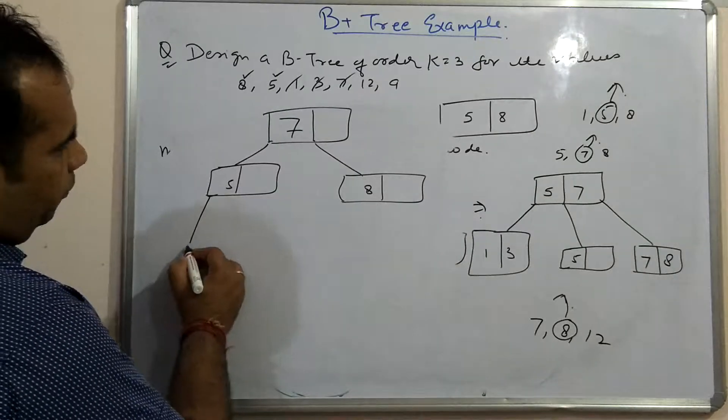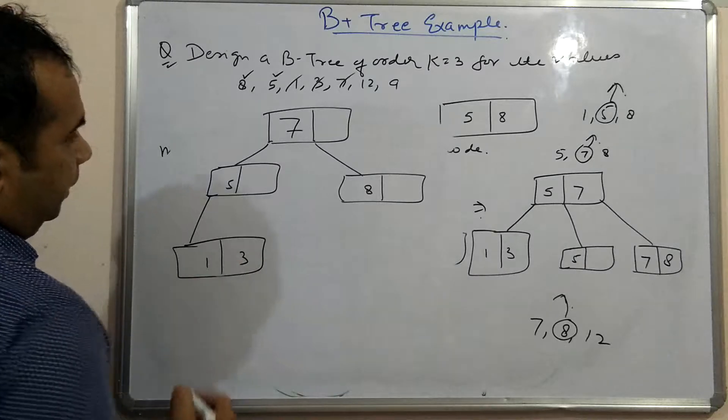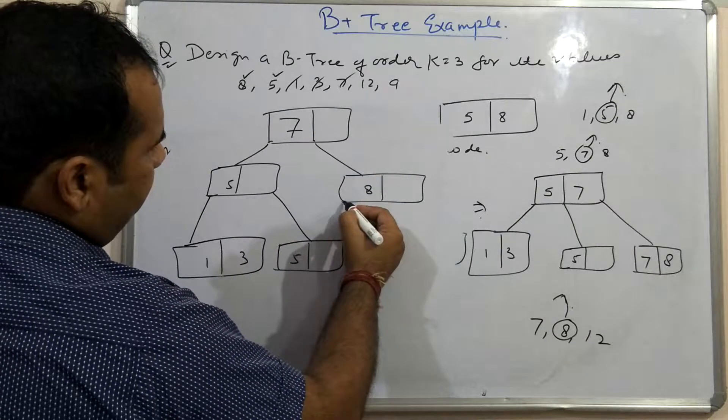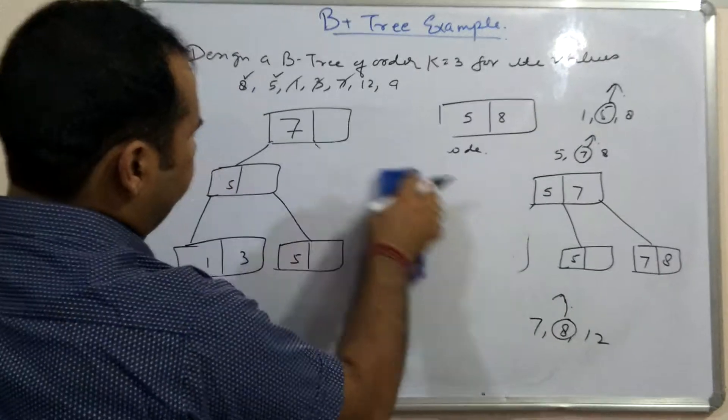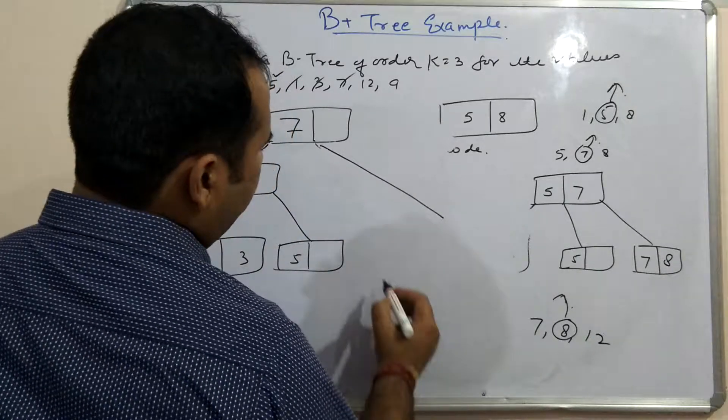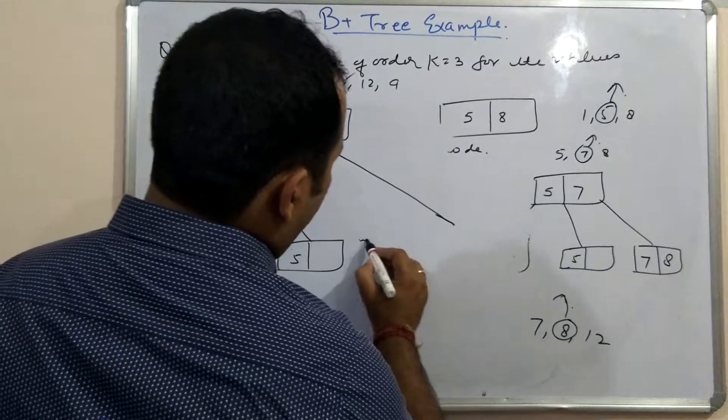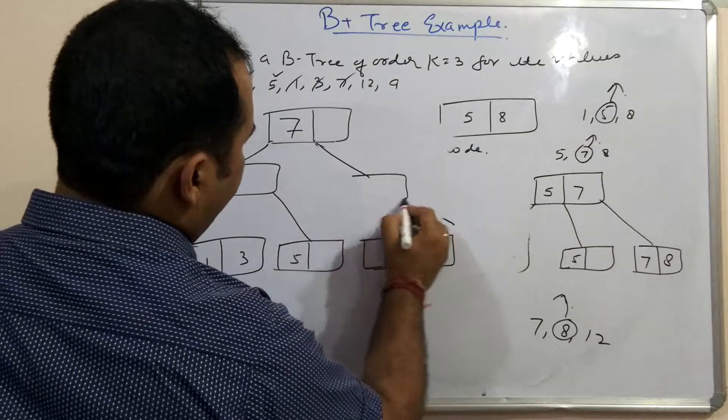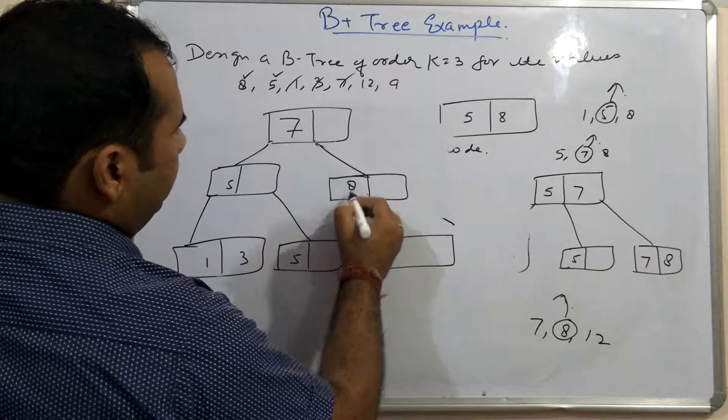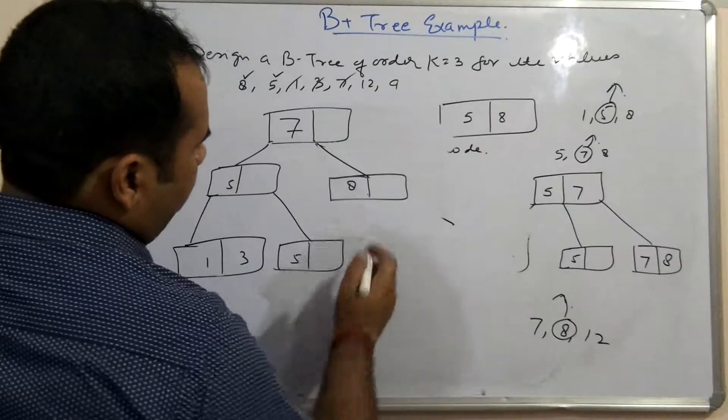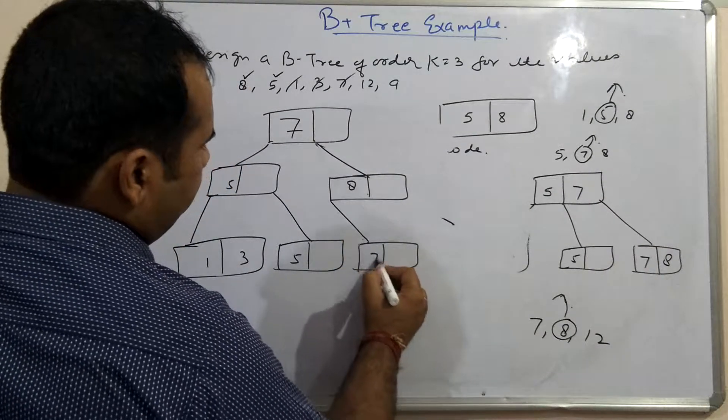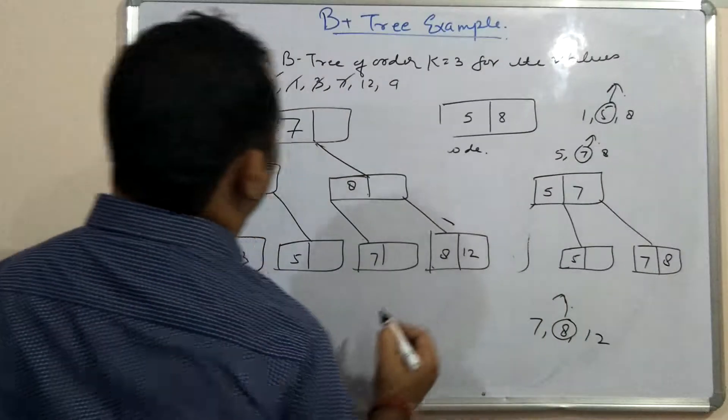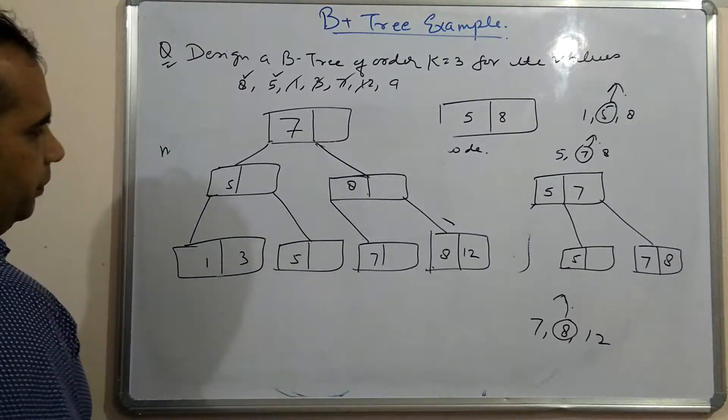Now using the concept of leaf notes, we continue building the tree. The node with 5 stays without any problem, 1 and 3 remain there. The node with 5 stays. Now 7 goes here. Let me redraw this slightly cleaner so the structure is clear. The tree structure continues with 7 and 8 levels, with proper connections between 7, 8, 9, and 12 at the leaf level.